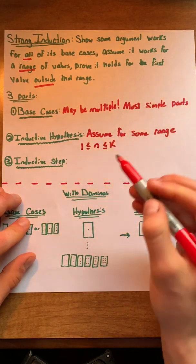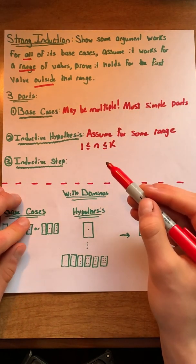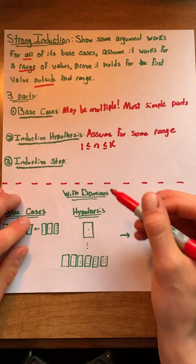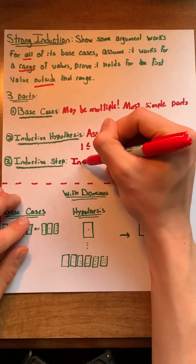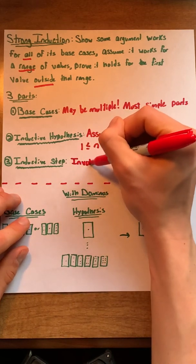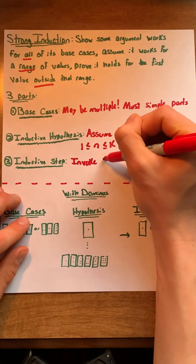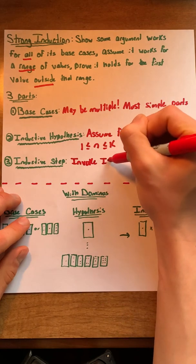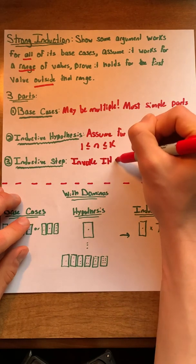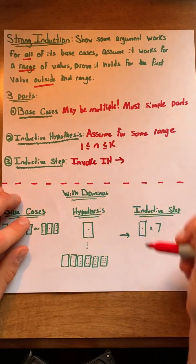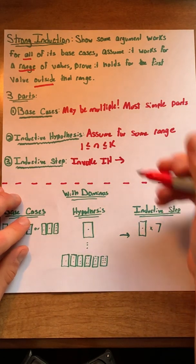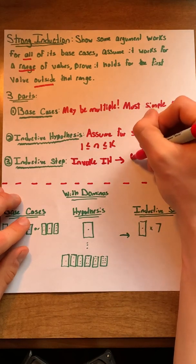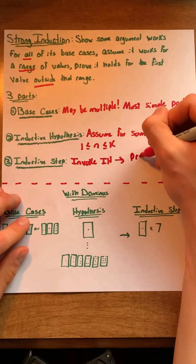That's our range of values. Finally, we have the inductive step. We want to make sure to invoke the inductive hypothesis, and we'll use that to prove it works for the first value outside the range.